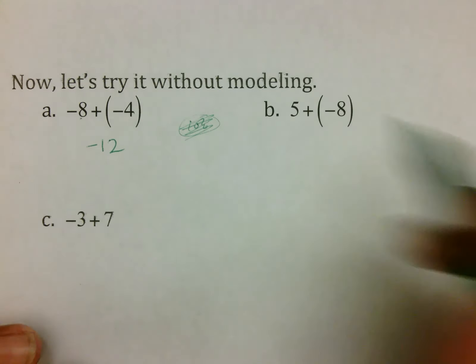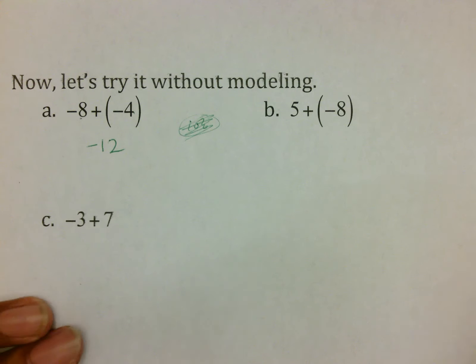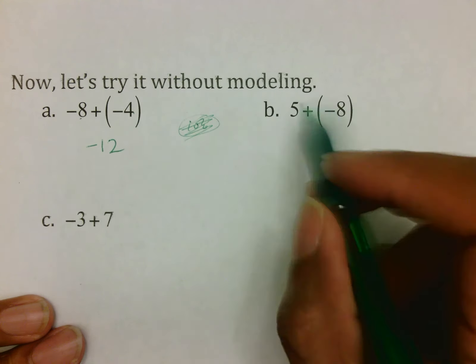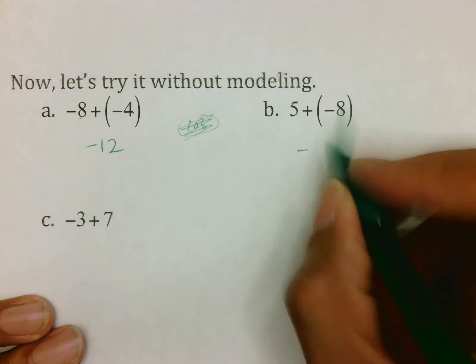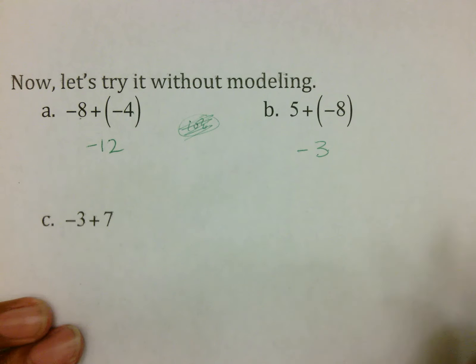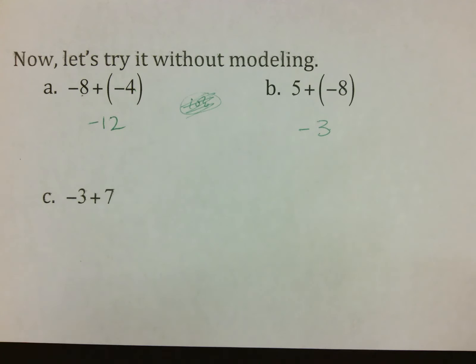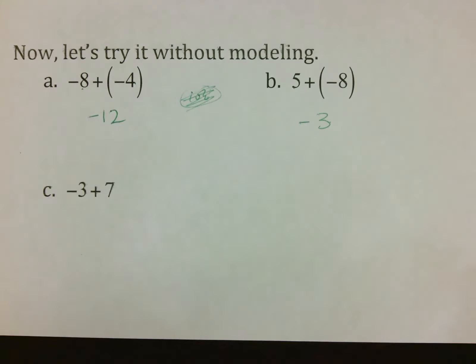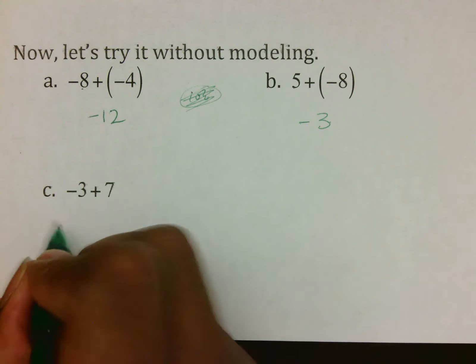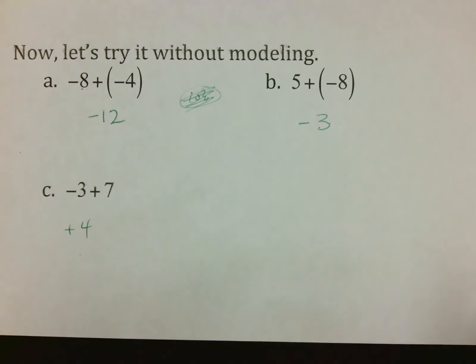Five plus negative 8: imagine putting five positives and eight negatives. Whenever there are positives and negatives, something cancels. Five of them cancel, negatives are left over, and there are three more negatives than positives — eight minus five is three — so your answer is negative 3. For negative 3 plus 7: three negatives and seven positives will cancel, positives are left over, and there are four more positives than negatives, so the answer is 4.